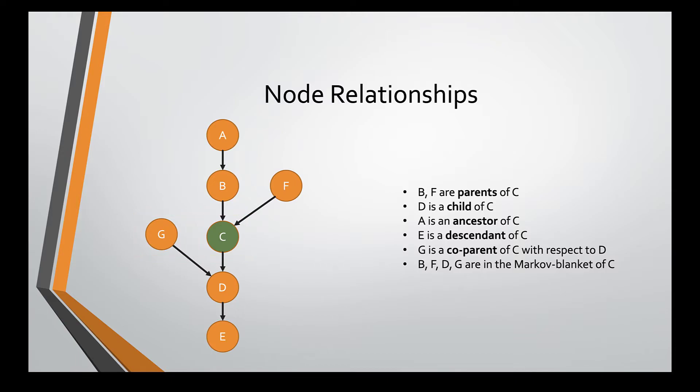The Markov blanket of a variable is defined as its parents, children, and co-parents. As such, the Markov blanket of C is a set of variables B, F, D, and G. The Markov blanket of a node is important because given the state of all the nodes in a Markov blanket, we know all we need to know to predict the node.